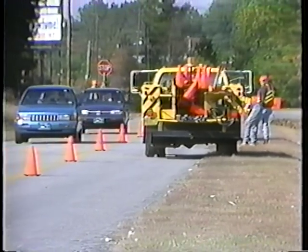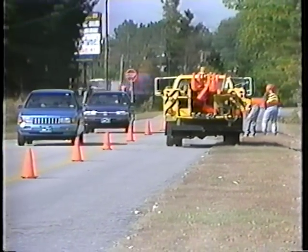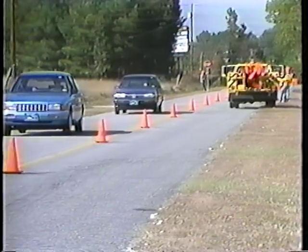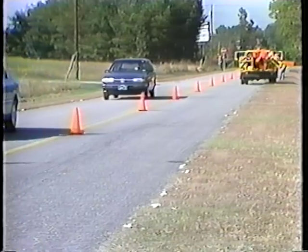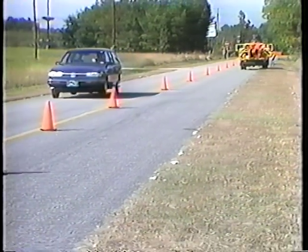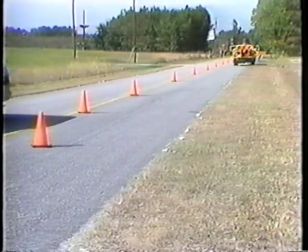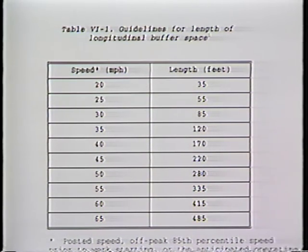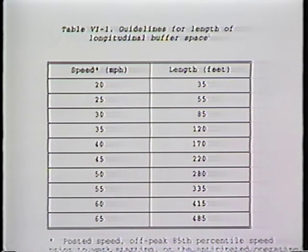It is important for the buffer space to be free of equipment, workers, materials, and vehicles. The length of the longitudinal buffer space is based on the stopping distance for the speed being considered. Table 6-1 of the Manual on Uniform Traffic Control Devices provides guidelines for the length of buffer spaces for various speeds. It is measured from the end of the transition area to the beginning of the work space.